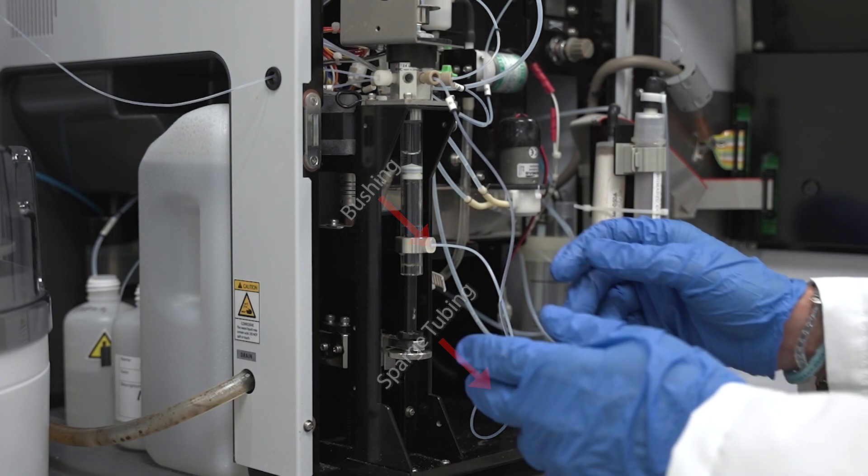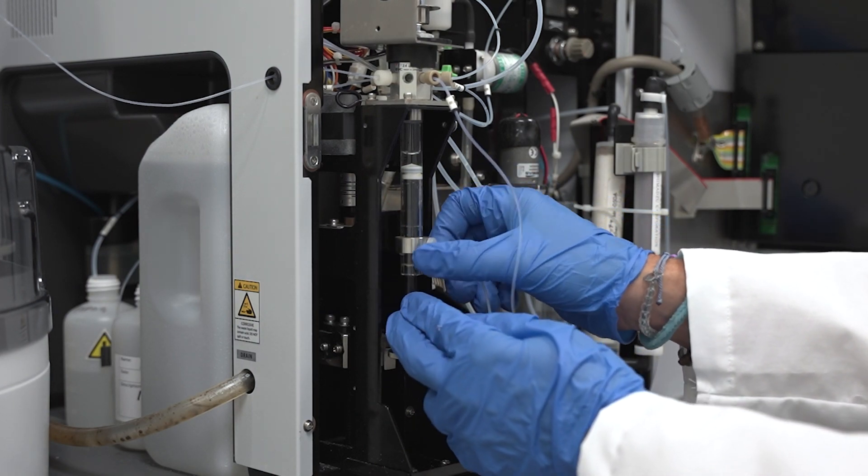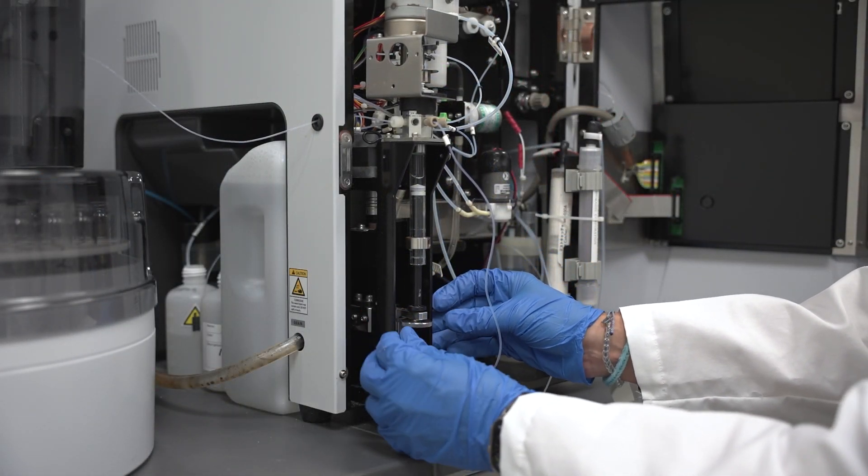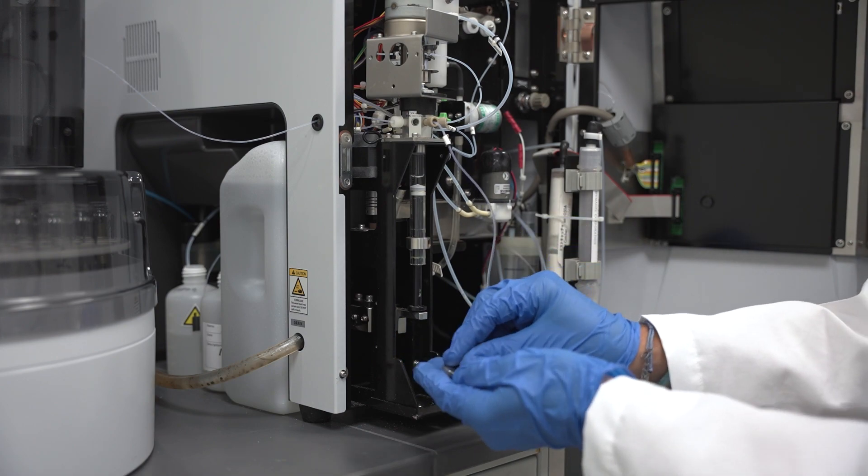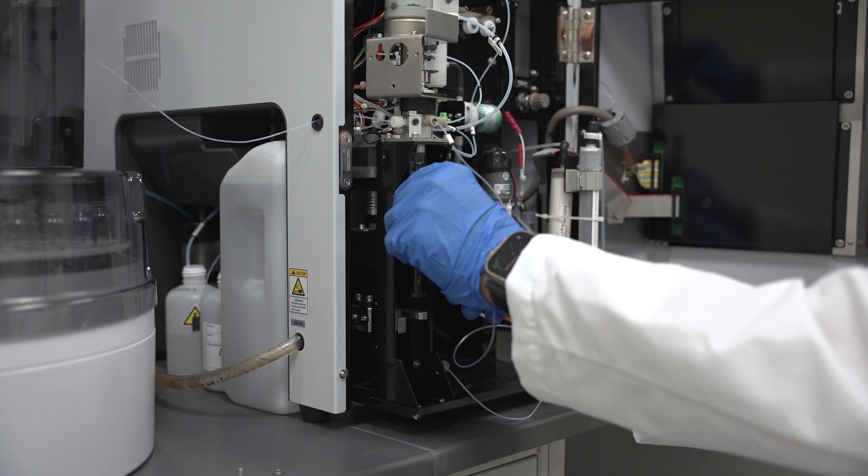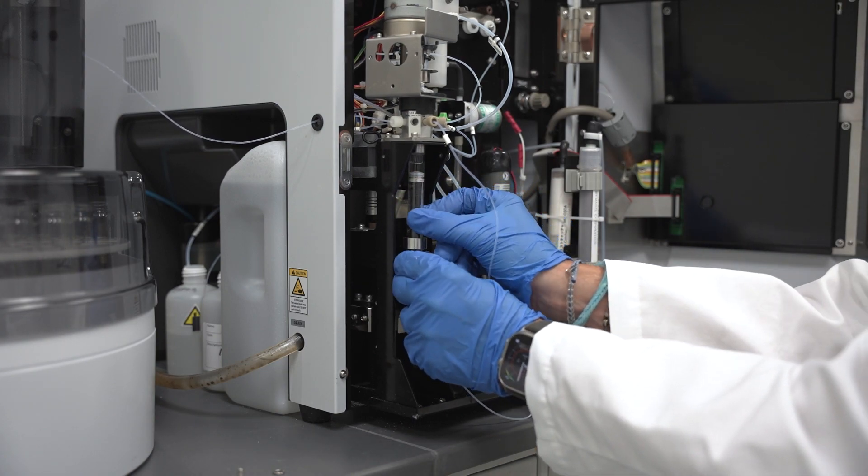Loosen the bushing on the side of the syringe and remove the sparge tubing. Remove the large retaining screw that connects the syringe plunger to the drive arm, making sure to not lose the locking washer. Firmly grasp the glass barrel of the syringe and unscrew it from the valve.